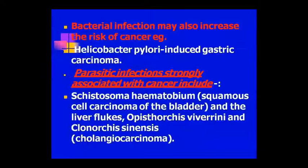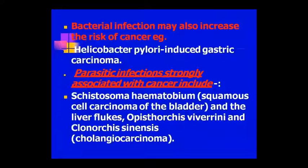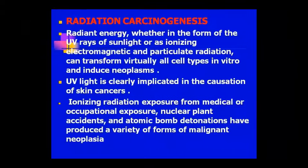Besides viruses, bacteria can also increase the risk of cancer. Helicobacter pylori causes gastric cancer. Parasitic infections can also be strongly connected with cancer: Schistosoma hematobium causes bladder squamous cell carcinoma. Liver flukes — Opisthorchis viverrini and Clonorchis sinensis — cause cholangiocarcinoma. So viruses, bacteria, and parasites all cause cancer as biological agents.